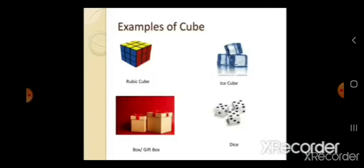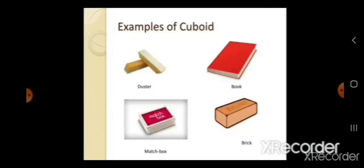Can you see them? The red circles are vertices. What are the examples? A duster, a book, a brick and a matchbox are examples of cuboid.